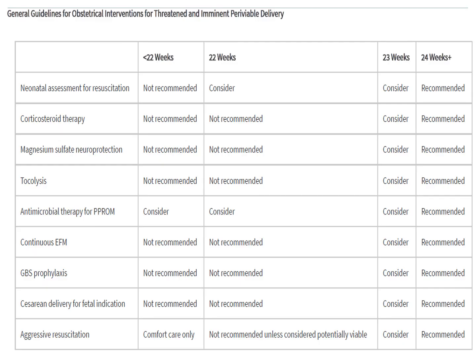These are guidelines for obstetric interventions for threatened and imminent very viable delivery. At less than 22 weeks, 23 weeks, and 24 weeks, different interventions are listed — some are not recommended, and some you could consider and recommend.